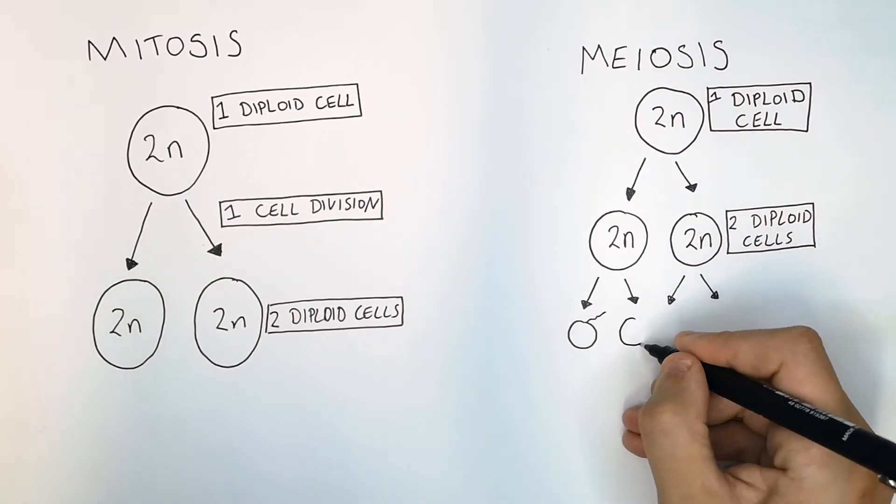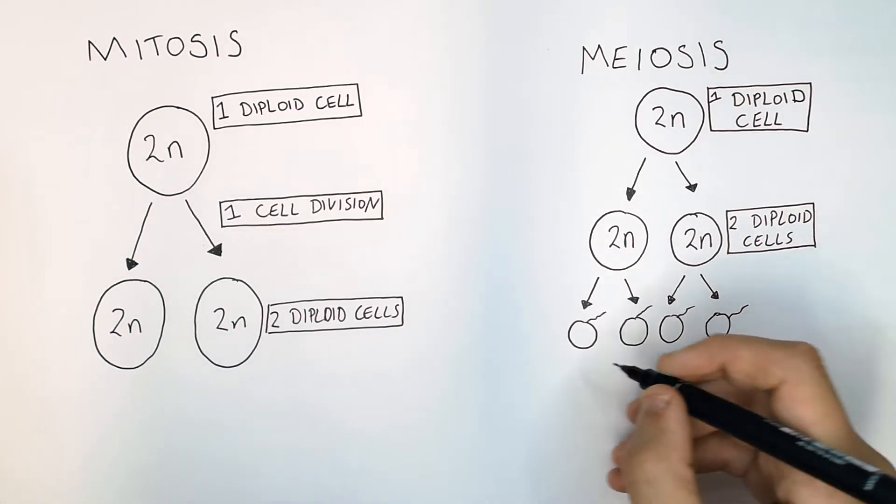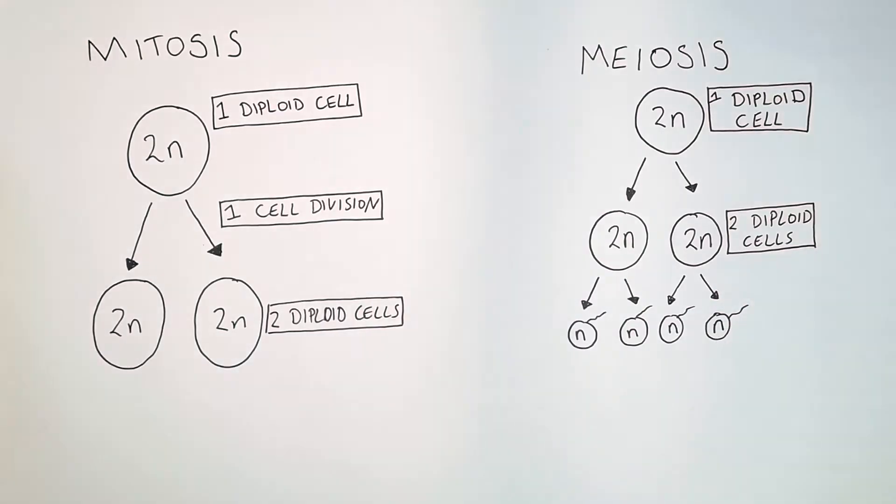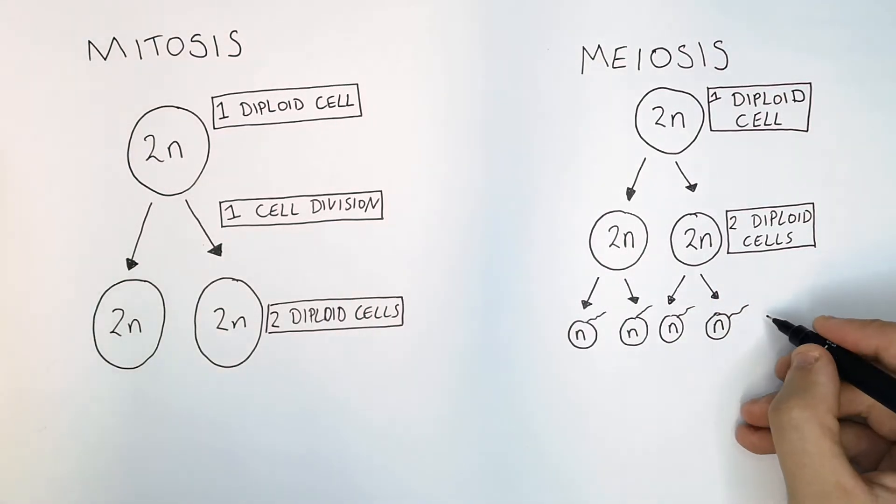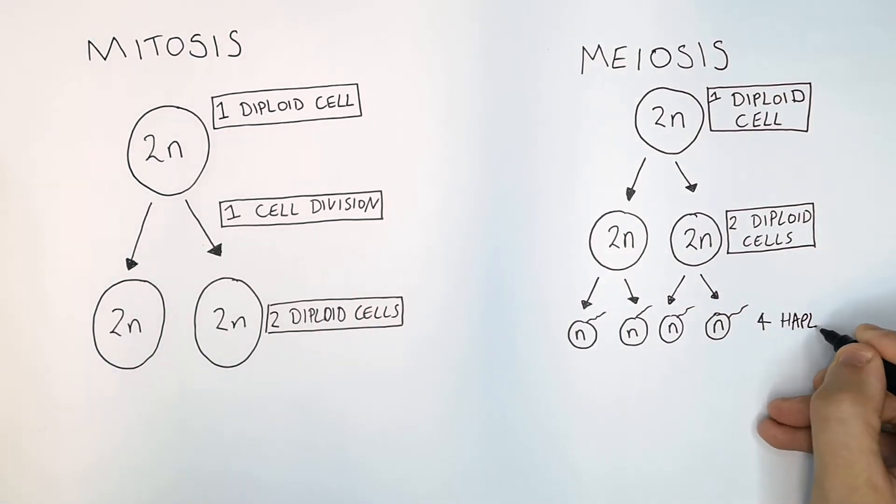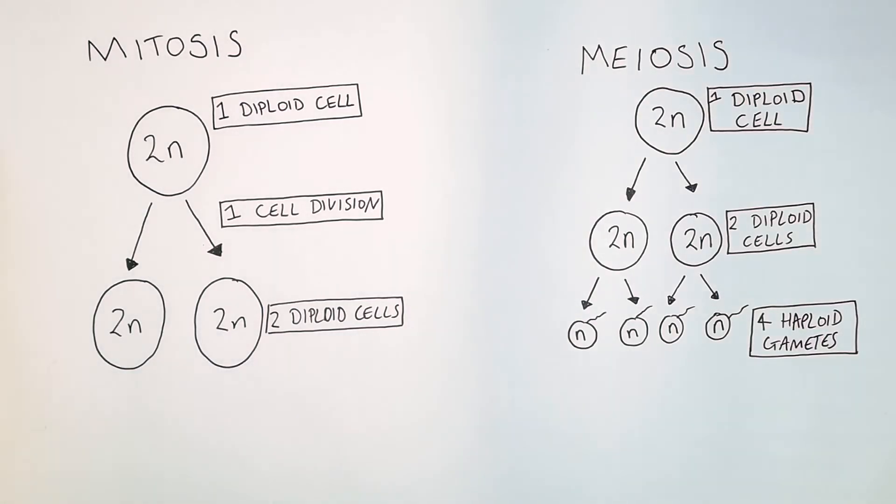So for a second cell division forming four gametes, four haploid gametes with one set of chromosomes. So it's four haploid gametes that form, and these haploid gametes are all genetically non-identical.